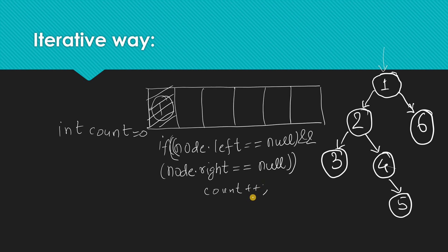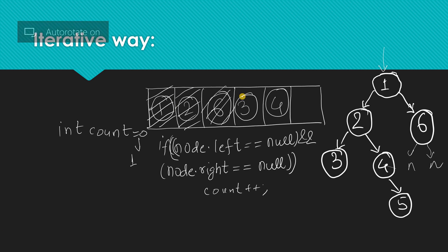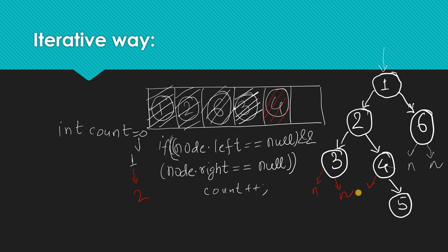We take a count variable equal to zero and increment count whenever that condition is satisfied. So whenever we pop a node, we check if it is a leaf node. If it is a leaf node, we increment the count. Otherwise, we push the left child and right child into the queue. We pop node three, check if its left and right children are null — they are — so count becomes two. Then we pop node four, its left child is null but the right child is not null.